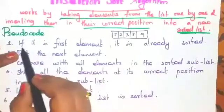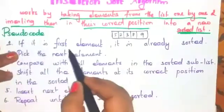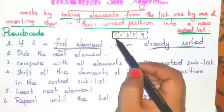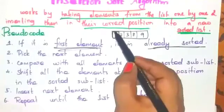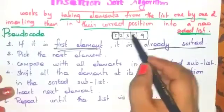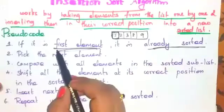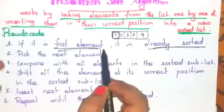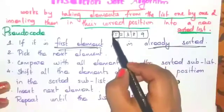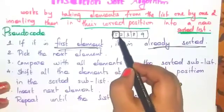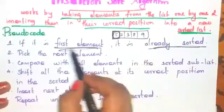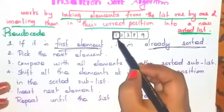In this array, if it is the first element, it is already sorted. Let us assume this first element is a sorted element. These are the unsorted elements. So, if it is the first element, then it is already sorted — this element is sorted, it is already sorted.